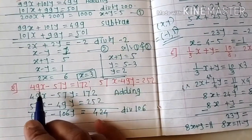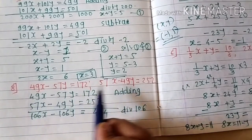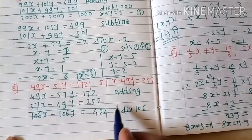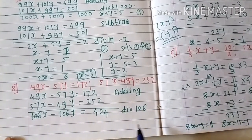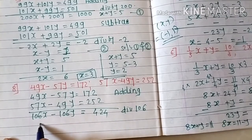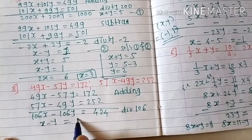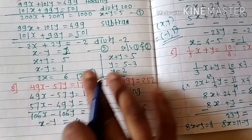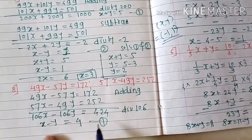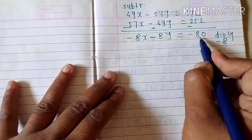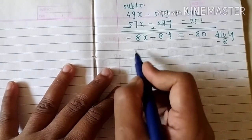Similar to the last example, in this equation also the coefficients of x and y are opposite to each other. Taking addition of the two equations — this is divisible by 106 — after dividing we get x minus y equals 4 as equation one. Taking subtraction gives minus 8x minus 8y equals minus 80, which is divisible by minus 8, giving x plus y equals 10 as equation two.